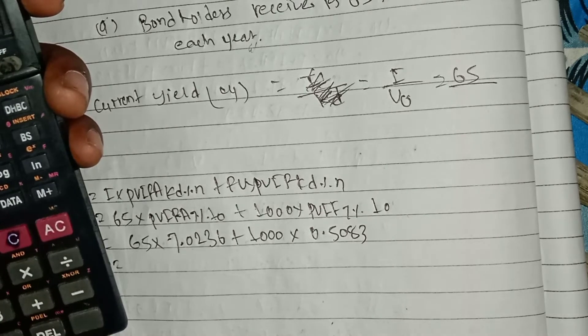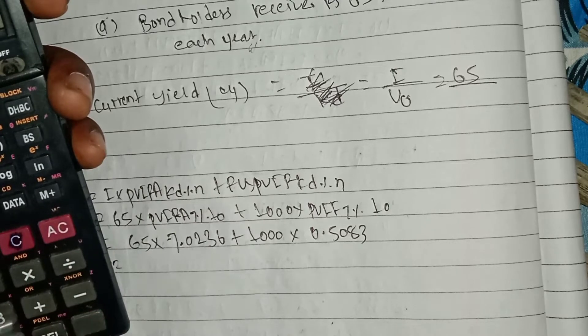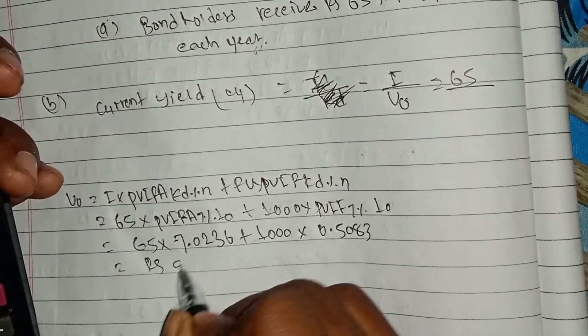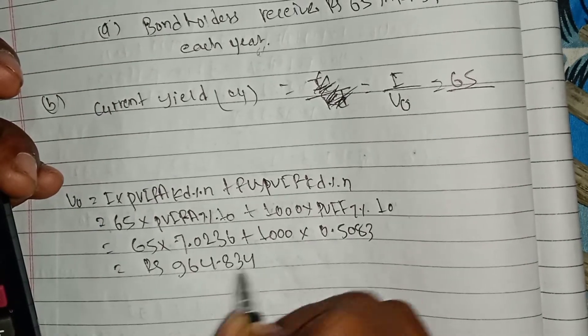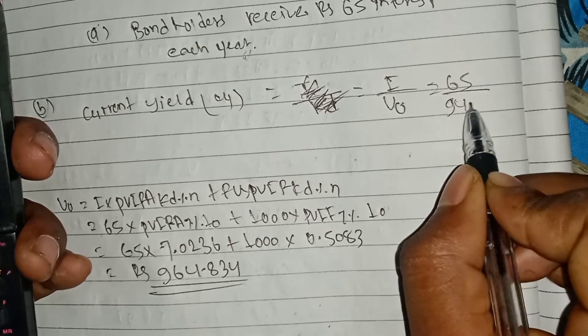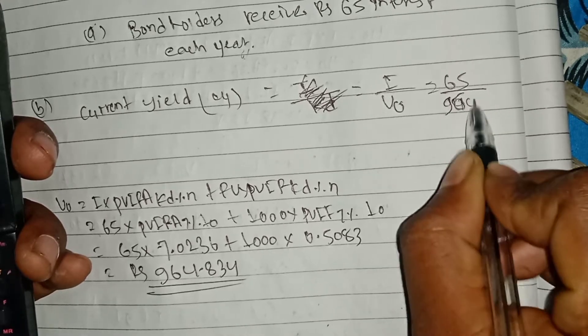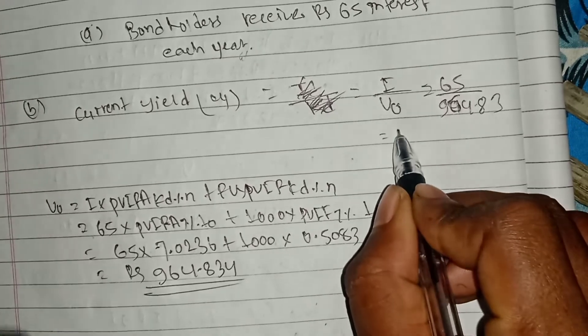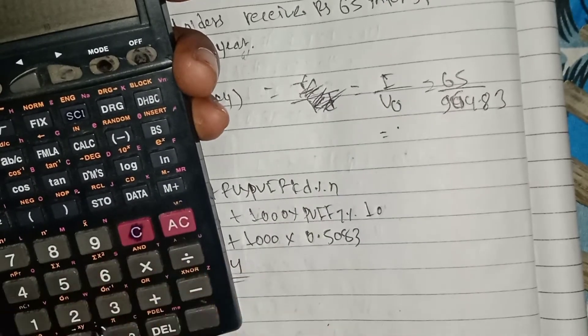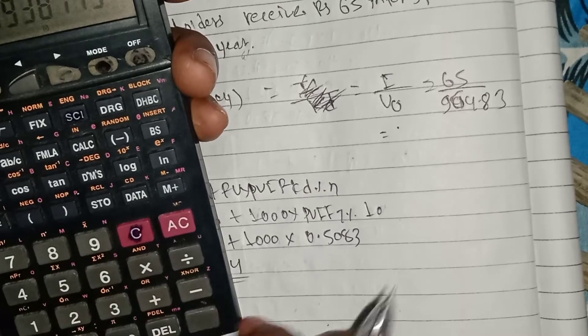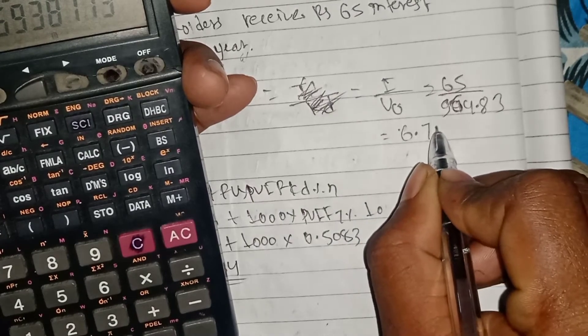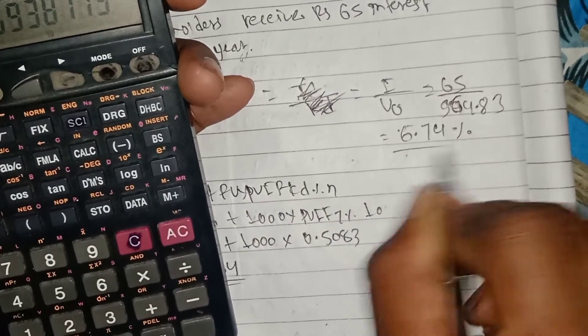So the calculation is 65 into 7.0236 plus 1000 into 0.5083, which equals rupees 964.834. This is the bond price.